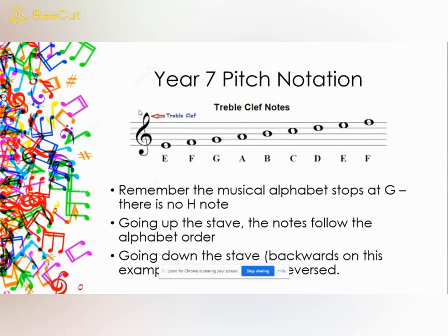If you just know that E is the bottom line and that it goes line, space, line, space, you can continue up the musical alphabet. Remember, in the musical alphabet there is no H — after G, we go back to A. So if you just knew where E was, you could work out that the middle line was B by going up: space is F, the next line is G, the next space is A, and that line is B.